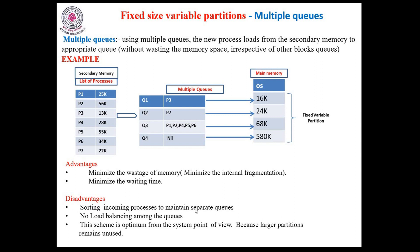Disadvantages: sorting incoming processes to maintain separate queues requires extra effort and consumes additional time. There is also no load balancing among the queues — Q1 has 1 process, Q2 has 1 process, Q3 has 5 processes, and Q4 has 0 processes, so all queues are not maintaining equal size. This scheme is optimum from the system point of view because larger partitions remain unused — Q4 has the largest partition size with 0 processes assigned, so that partition cannot be used.